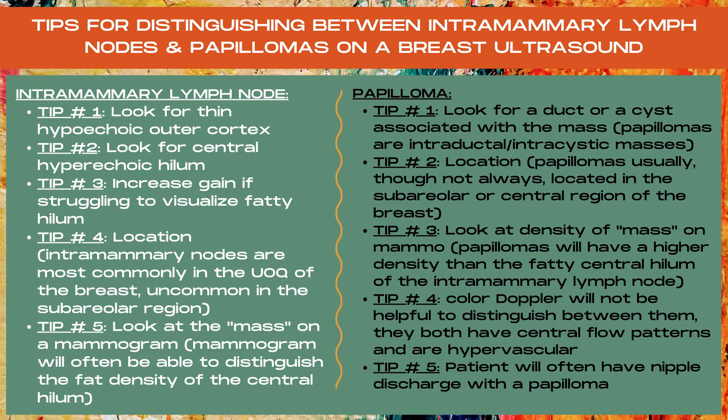Tip number four: consider your location in the breast. Intramammary lymph nodes are most commonly located in the upper outer quadrant of the breast and are uncommon in the subareolar region. Tip number five: look at the mass on a mammogram image. The mammogram will often be able to distinguish the fat density portion of the central fatty hilum if it's an intramammary lymph node.